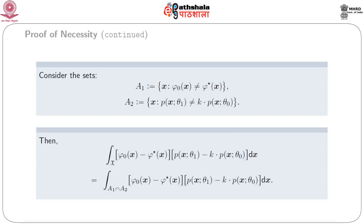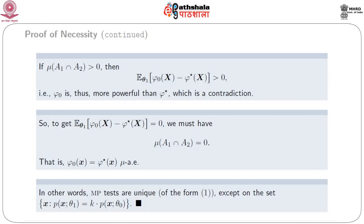For the remaining part, either the difference of phi-naught(x) and phi-star(x) is 0, or p(x; theta-1) minus k times p(x; theta-naught) is equal to 0, or both differ. If mu(A-1 intersection A-2) is greater than 0, we get E_{theta-1}[phi-naught(x) minus phi-star(x)] is greater than 0, that is phi-naught is becoming more powerful than phi-star, which is a contradiction since we have taken phi-star to be most powerful. So, to get E_{theta-1}[phi-naught(x) minus phi-star(x)] equal to 0, we must require that mu(A-1 intersection A-2) equals 0, that is phi-naught(x) equals phi-star(x) almost everywhere mu.